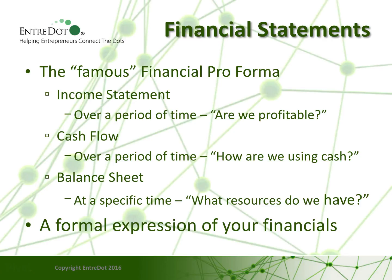You've probably heard the term financial pro forma — financial guys love to use that term just to confuse everybody. It basically consists of three financial statements. The first is an income statement, expressed over a period of time, usually two or three years, with the main focus on the first year. It simply tries to show whether you are profitable — factoring in all revenue, costs, and expenses to calculate profitability month by month.